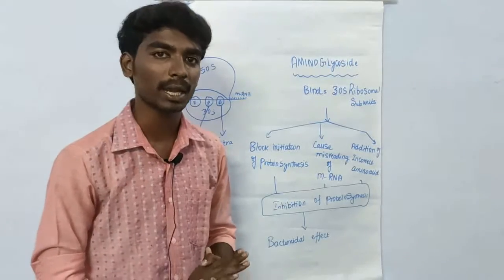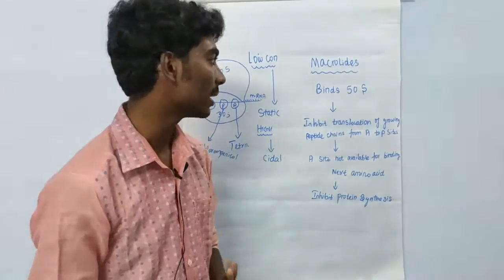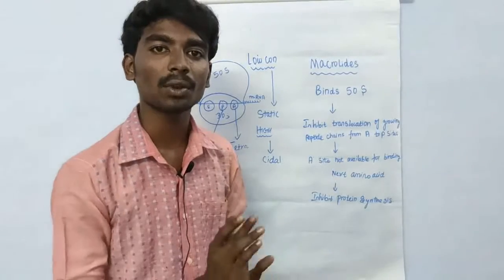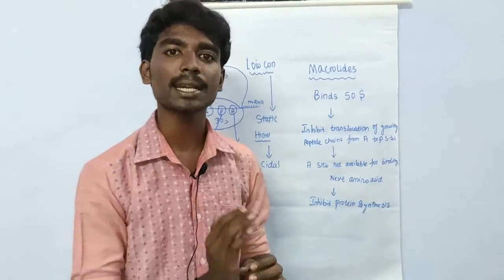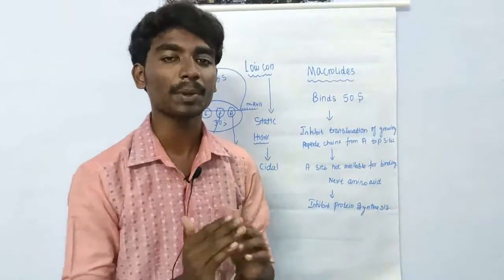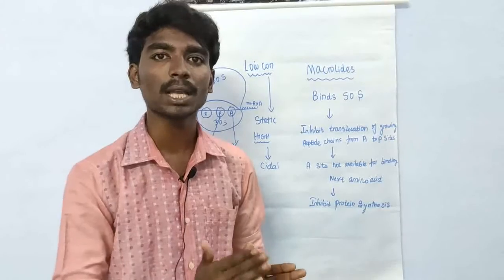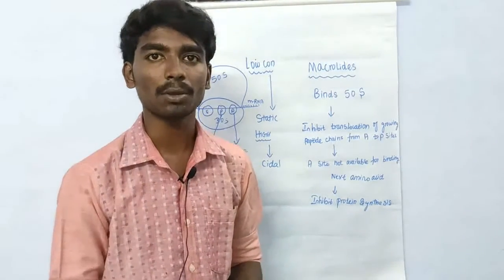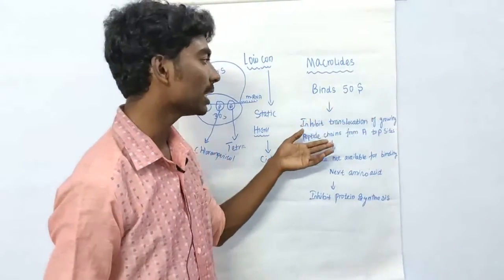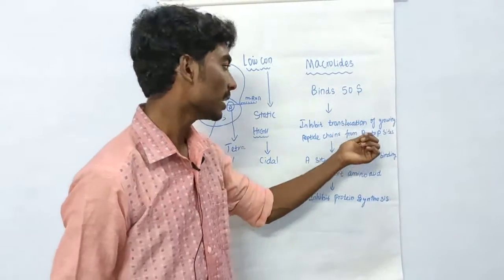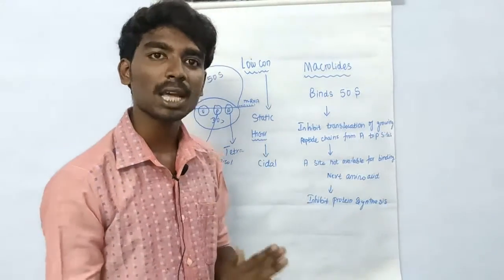This is aminoglycoside mechanism. Next one is macrolide mechanism. How to bind? 50S ribosomal subunit binds. 50S bind is translocation of growing peptides, peptide grows from A side to P side, translocate. Translocation of growing peptides from A to P side. A side is not available for binding next amino acids. This is protein synthesis.